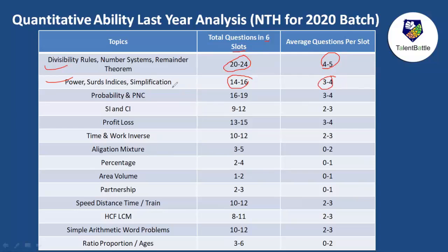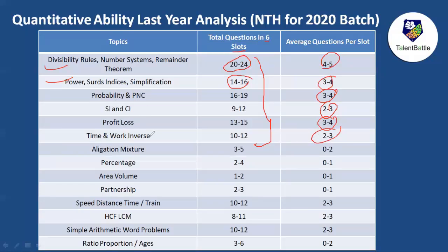This is the full analysis of all topics that appeared in Wipro Elite last year for the 2020 batch. The most important topics are: divisibility rules, number system, remainder theorem, powers/indices, and simplification. Other important topics with three to four questions per slot include simple interest, compound interest, probability, permutation and combination, profit and loss, time and work, inverse-based time and work, speed-distance-time, and train problems — around 10 to 12 total questions.